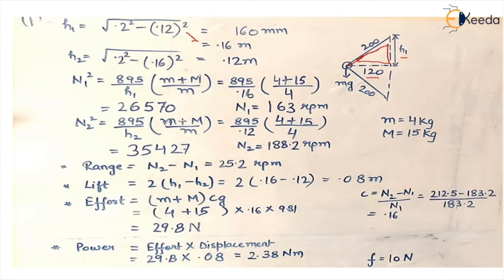Now the second case says when the radius of rotation is 0.16, so when this becomes 0.16 the h2, the height that we'll get will be 0.12 meter.